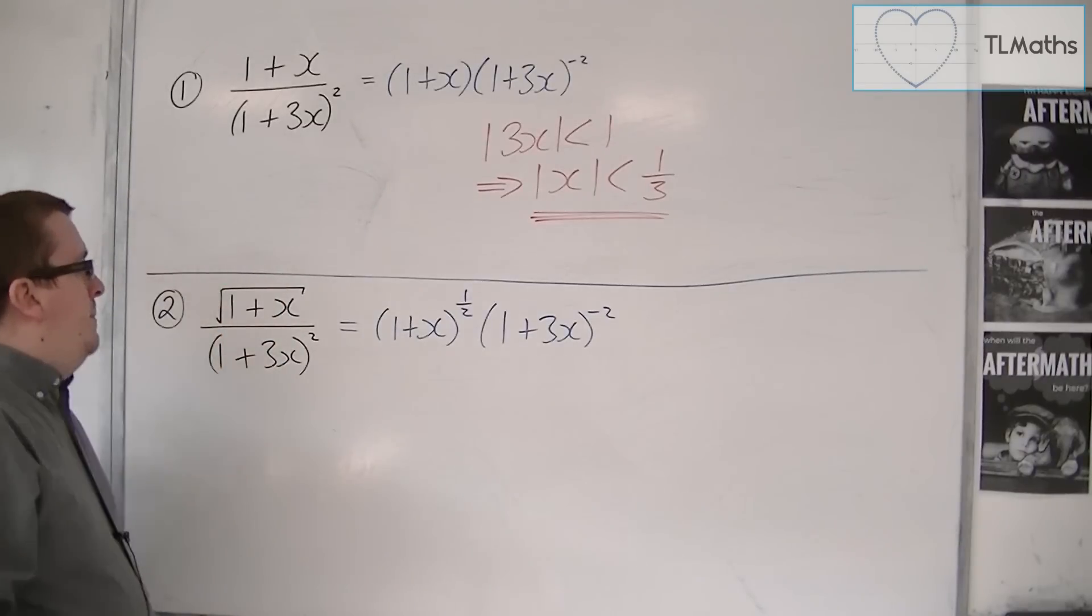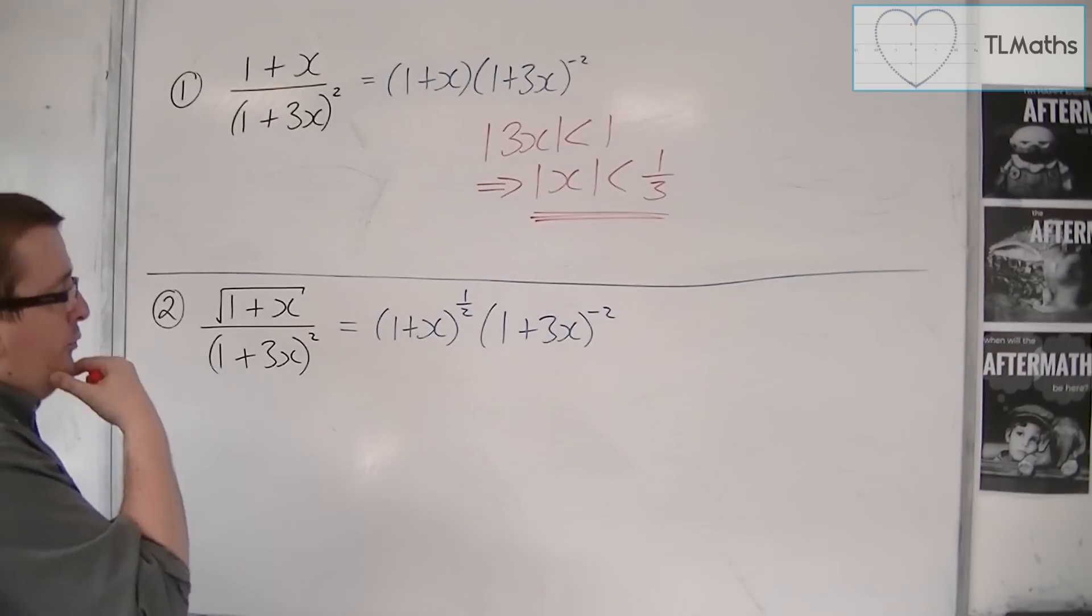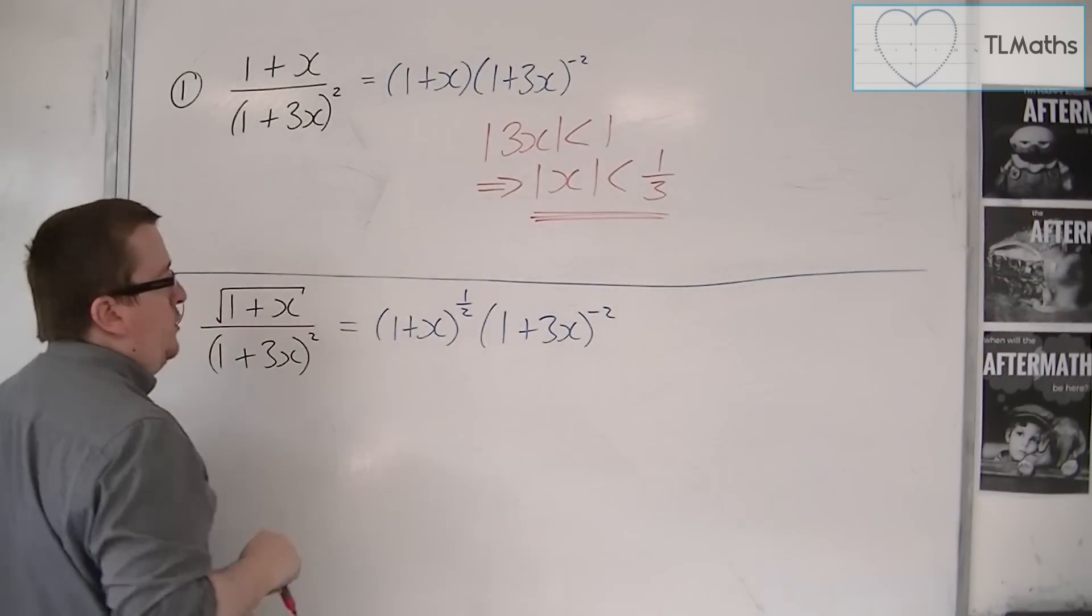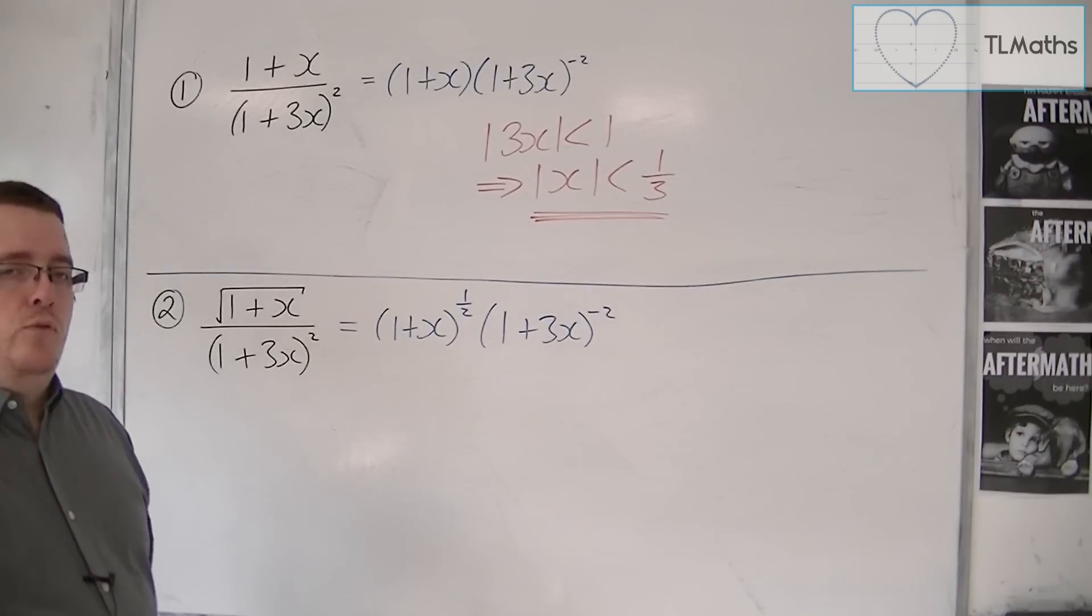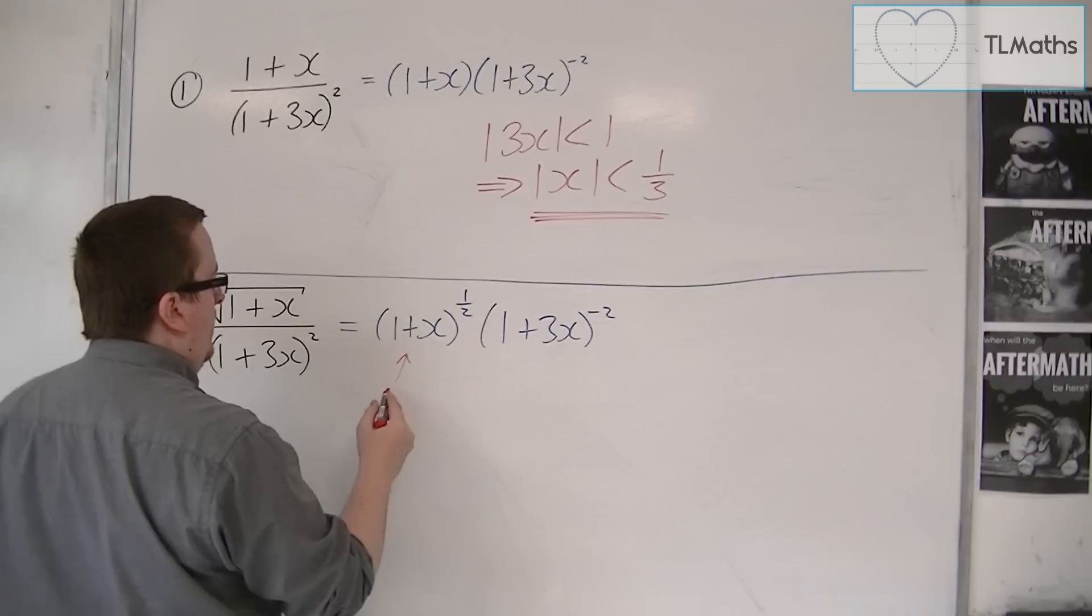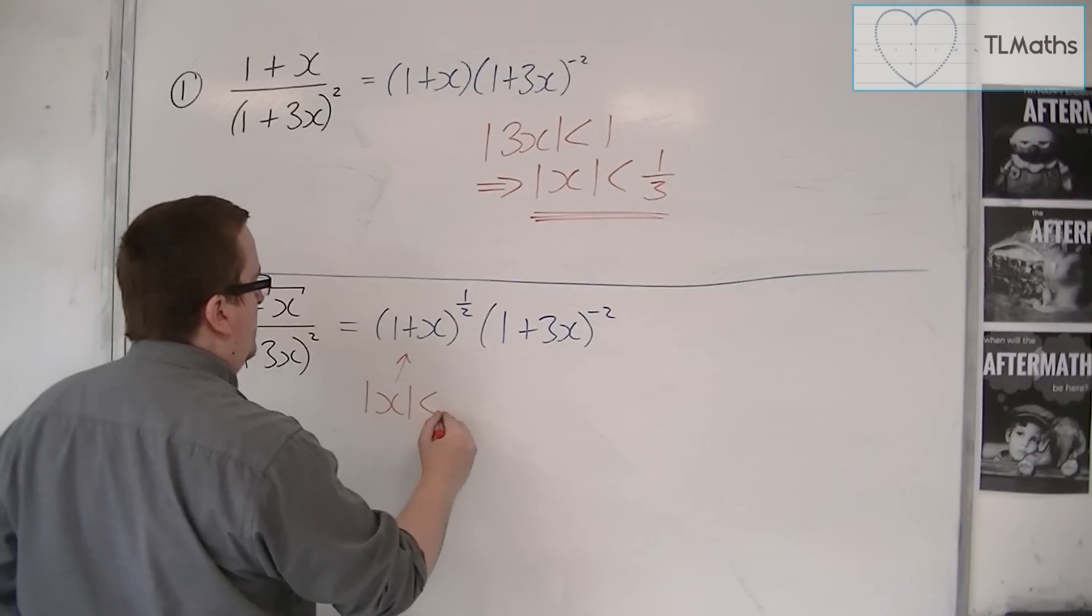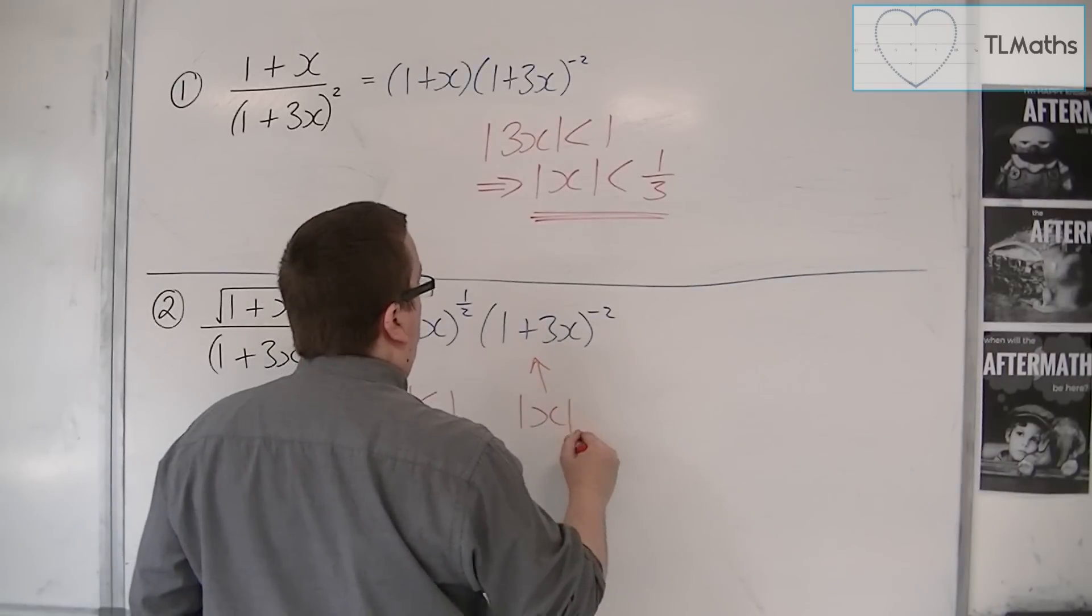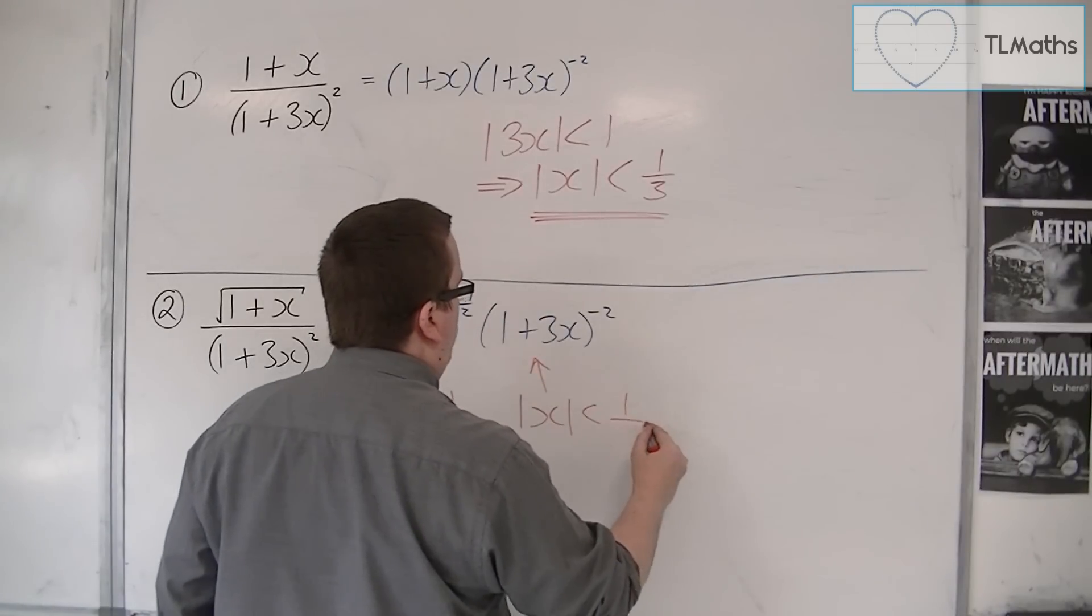Now for number 2. For this one, we actually have two binomial expansions, both of which have a separate range of validity. So this one has mod x is less than 1, and this one has mod x, as we just found, is less than 1 third.